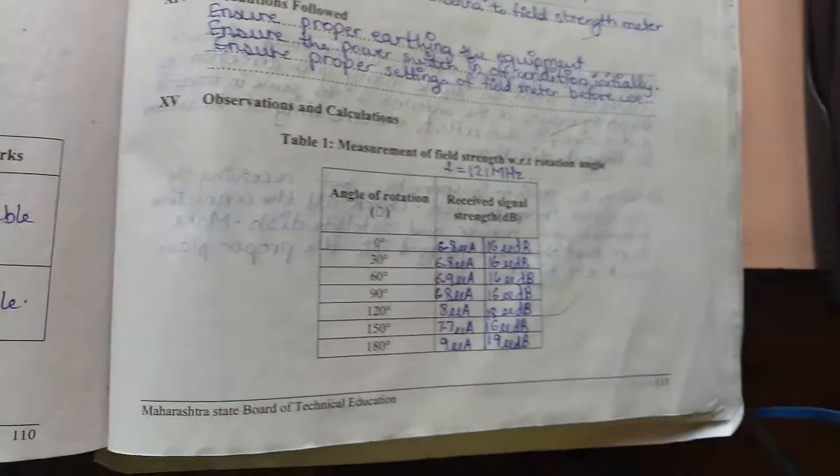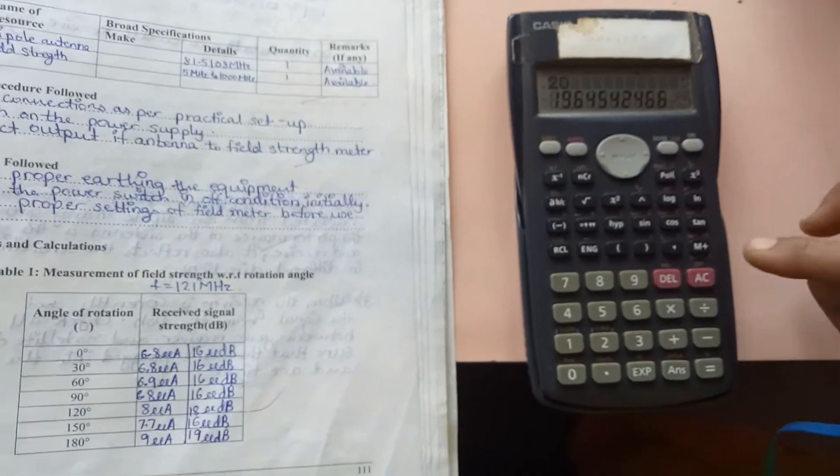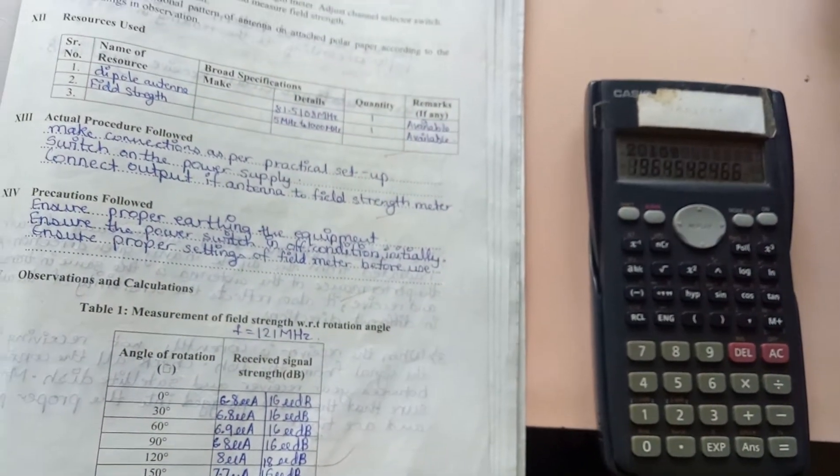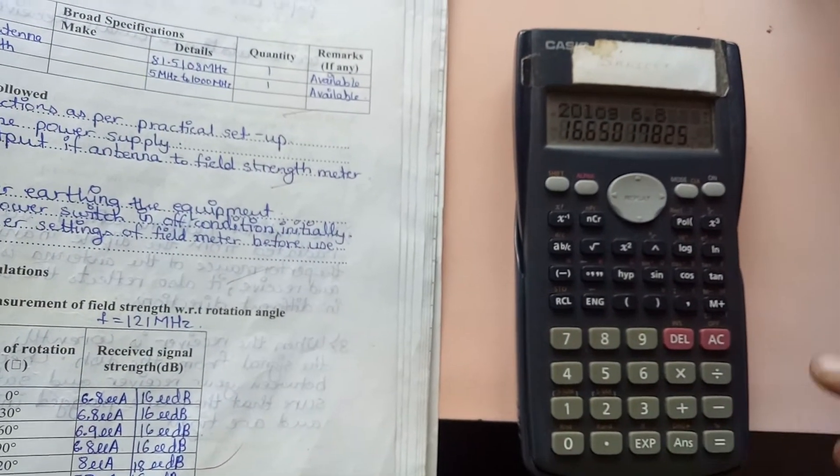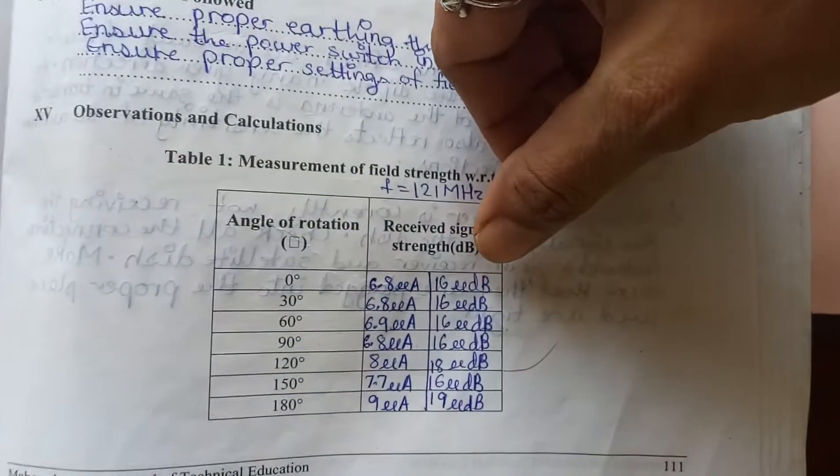To convert to dB, we use the formula 20 log of power. 20 log of 6.2 gives 16.6 dB.